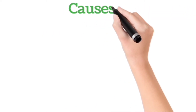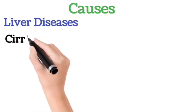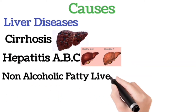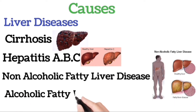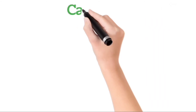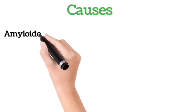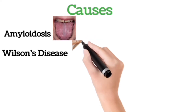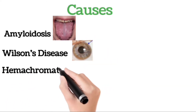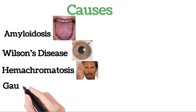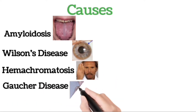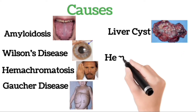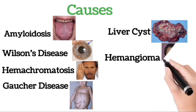Causes: Many diseases and conditions can cause an enlarged liver, including liver disease, cirrhosis, hepatitis caused by a virus including hepatitis A, B, and C, or caused by infectious mononucleosis, non-alcoholic fatty liver disease, alcoholic fatty liver disease, or a disorder that causes abnormal protein to accumulate in your liver such as amyloidosis, or a disorder that causes copper to accumulate in your liver.